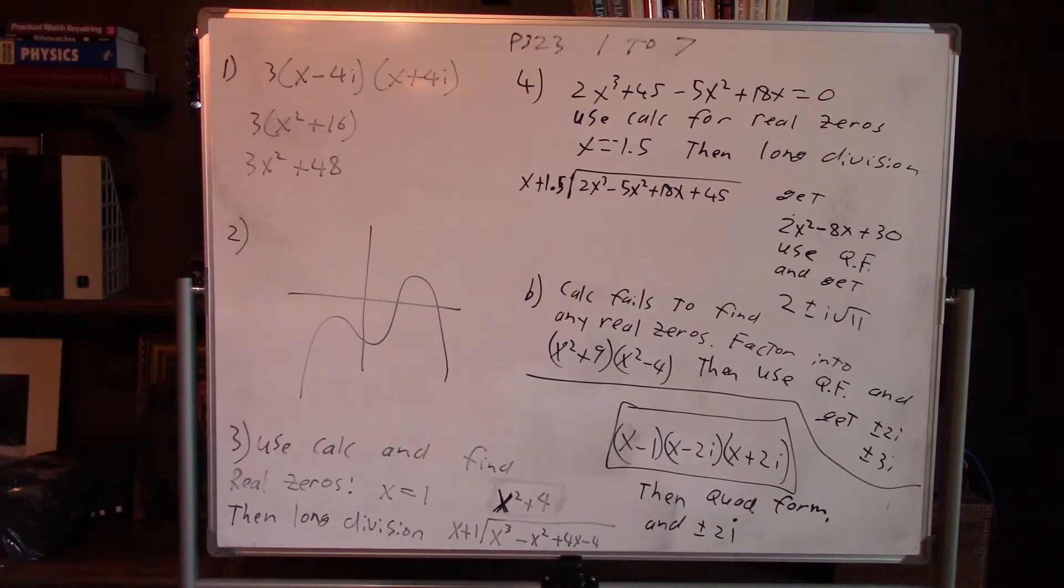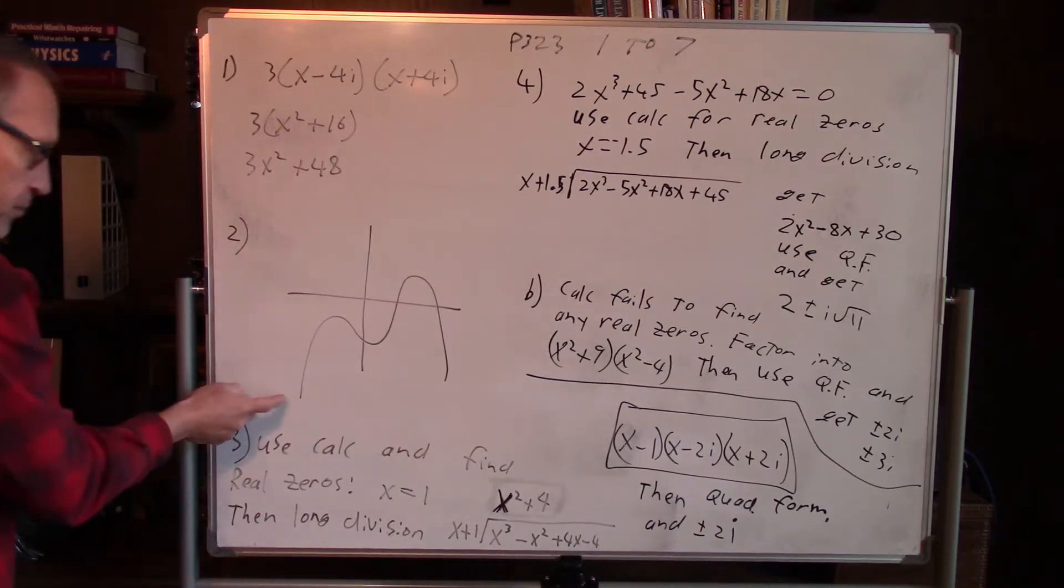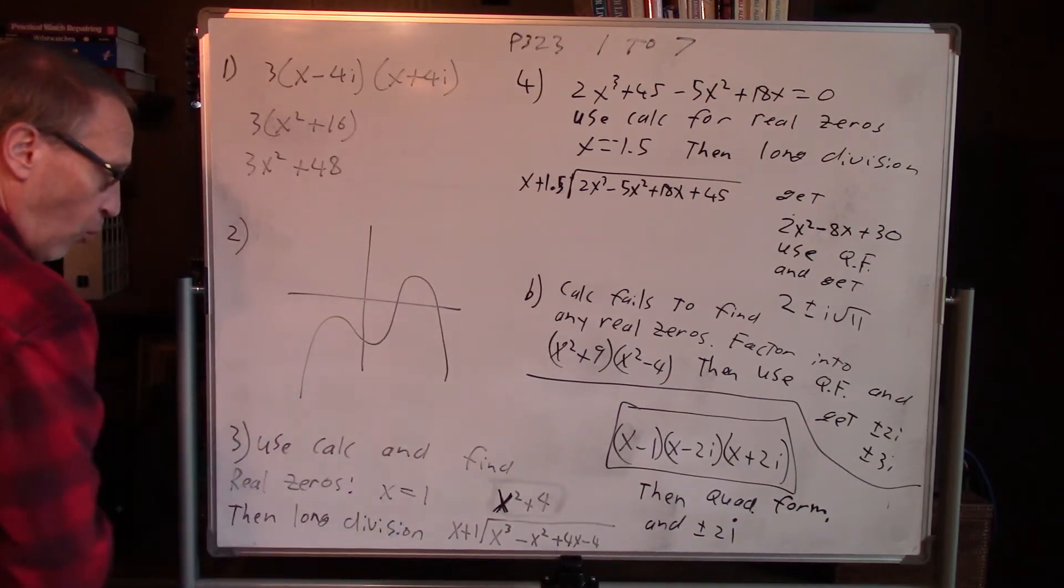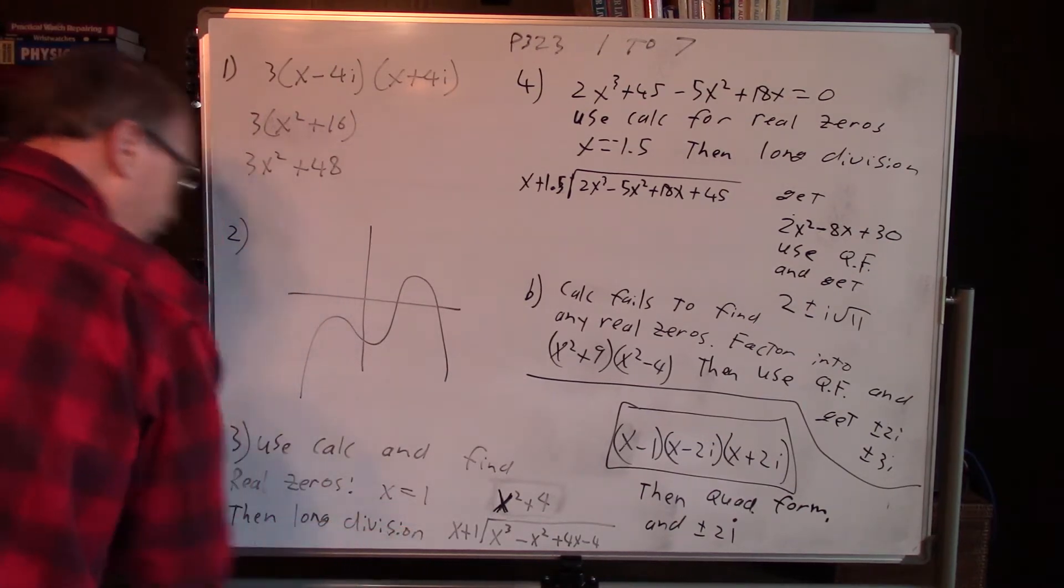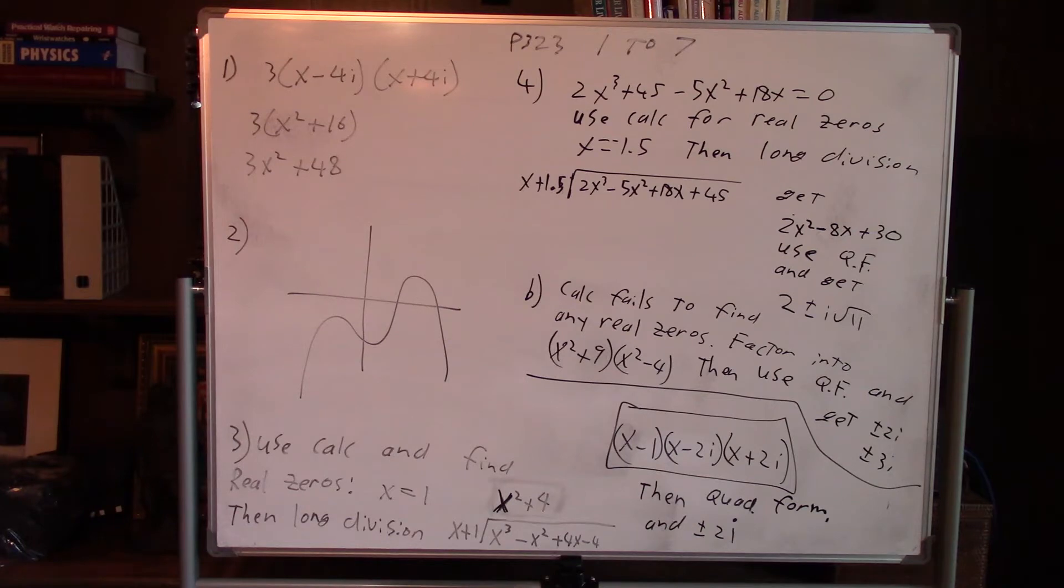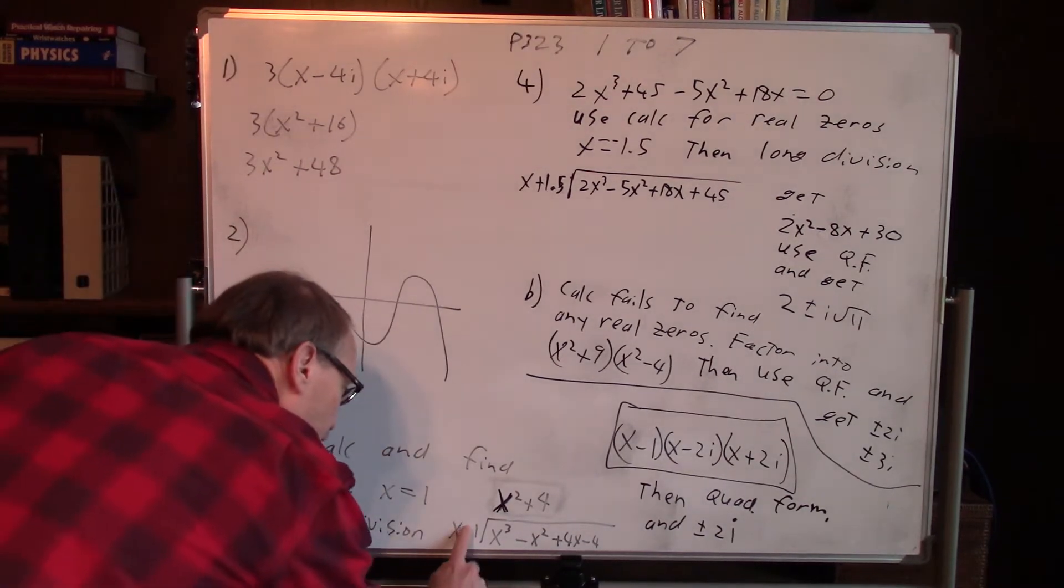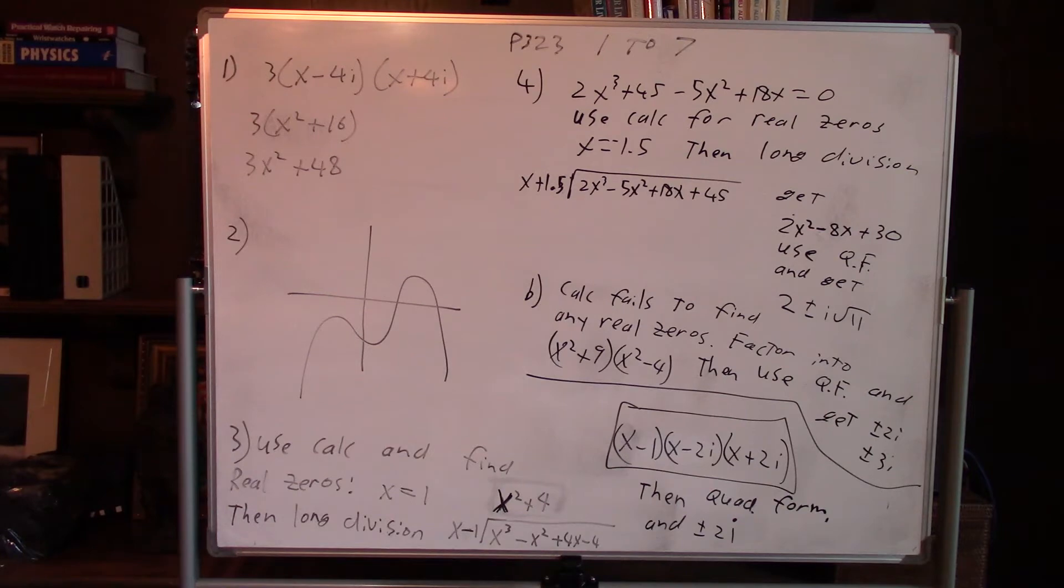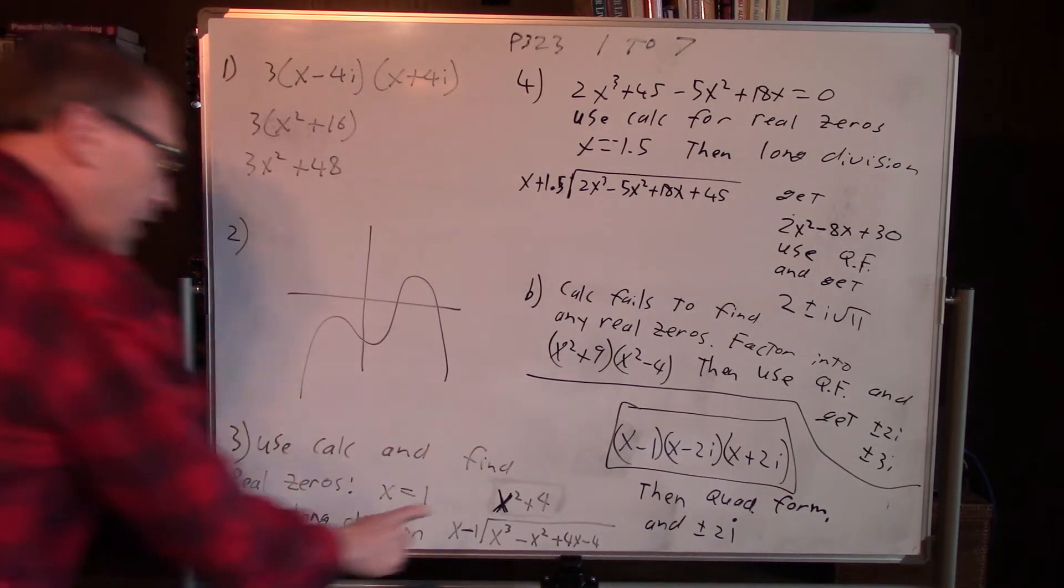Number 3 says write in completely factored form. So use your calculator, find a zero, as many zeros as you can, real ones. One of them is at 1. Then you do long division of x minus 1. One is a zero, so you divide by x minus 1 right here.